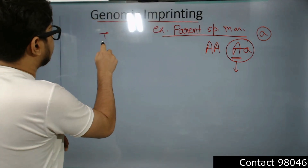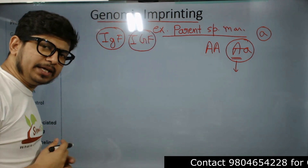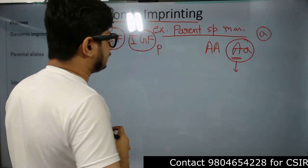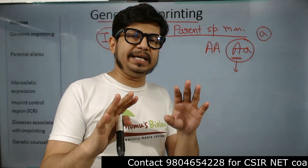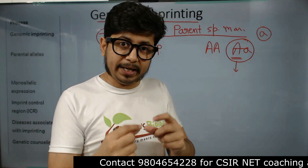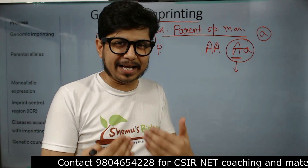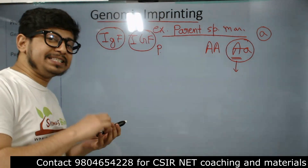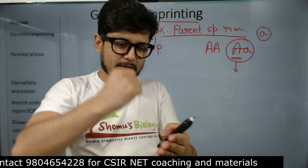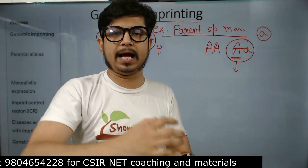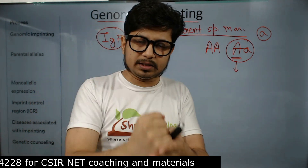For example, IGF — insulin growth factor — is tagged for paternal imprinting. It means IGF will be expressed from the chromosome obtained from the father only, not from the mother. That is known as imprinting. Imprint means you are stamping or tagging something. This gene is imprinted — it will be expressed from the father's origin, not from the mother's origin. There are other genes which can be expressed from the mother's origin and not from the father's origin.